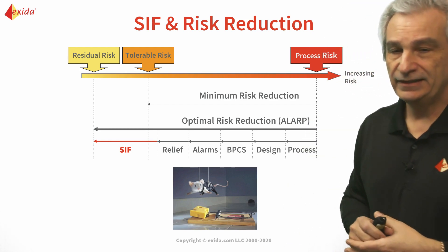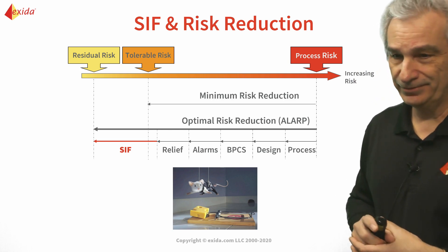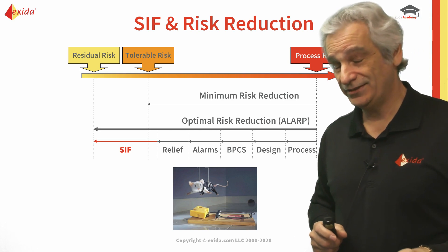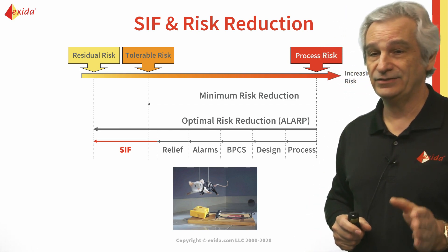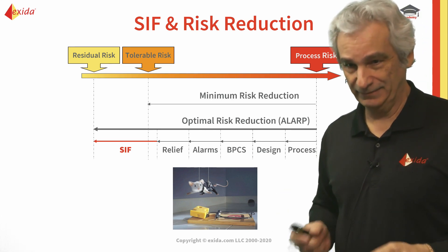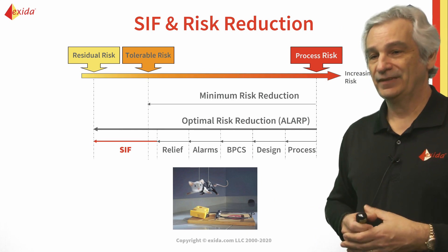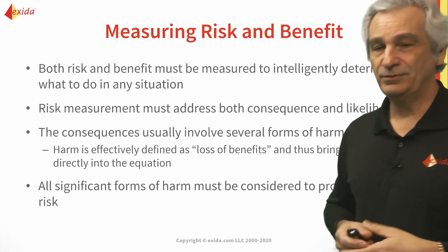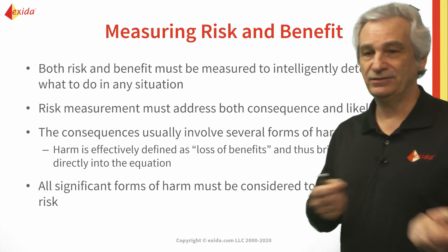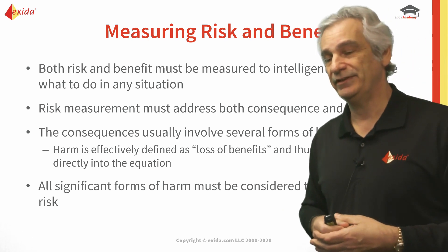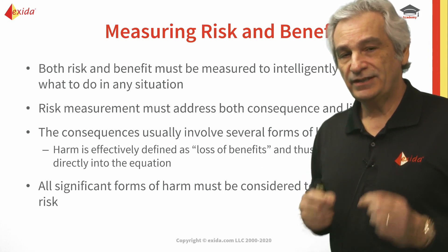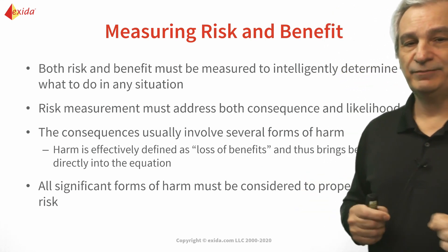You'll notice that this represents optimal risk reduction - ALARP. ALARP is a term that comes from the HSE in the UK and it stands for As Low As Reasonably Practicable. We'll talk about ALARP in a couple of slides. What we have to do is measure both our risk and our benefit - we have to look at both of these intelligently to determine what to do in any given situation. We can't just look at one of the two elements on their own.